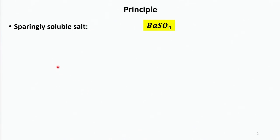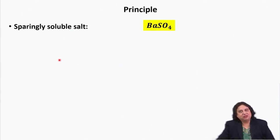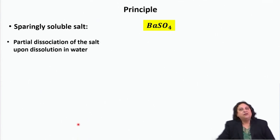Let us start by considering the sparingly soluble salt that we are going to use in our experiment — it is barium sulphate. It is a white solid powder which can be dissolved in water, but only a small part of the solid barium sulphate will get dissolved. Therefore, I will have only a partial dissociation of the salt upon dissolution in water.